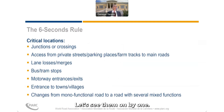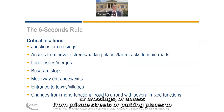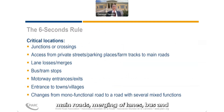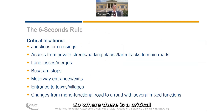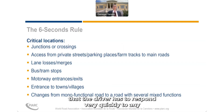Let's see these rules one by one. For the six-second rule, this is applied mainly at critical areas like junctions or crossings, access from private streets or parking to the main roads, merging lanes, bus and tram stops, and so on. Where there is a critical part of the network, the six-second rule applies — the driver has to respond very quickly to any incident.